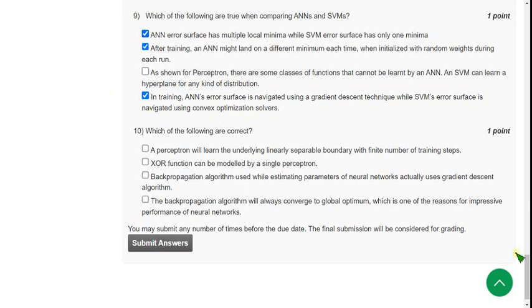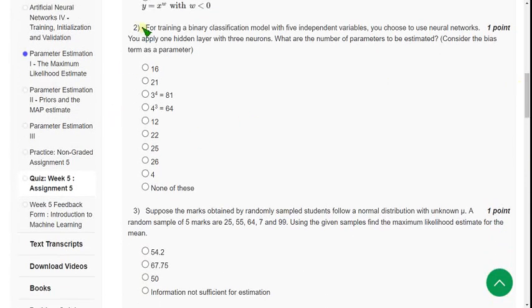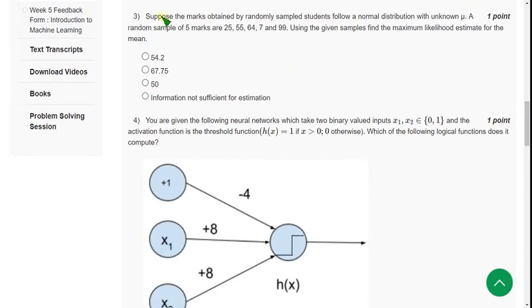Now I will share the probable solutions for the remaining ones. For second question, I am not sure about this. If I get the answer, I will inform you in the comment section. I am not giving the solution as of now for second question. For the third question, they are asking to find maximum likelihood estimate. For this, I think the probable solution is third option, 50. If anyone knows the correct answer for these questions, please give it in the comment section.